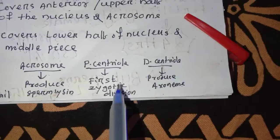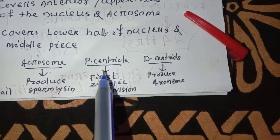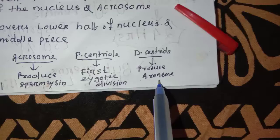The proximal centriole is responsible for the first zygotic division and zygote formation. The distal centriole produces the axial filament.